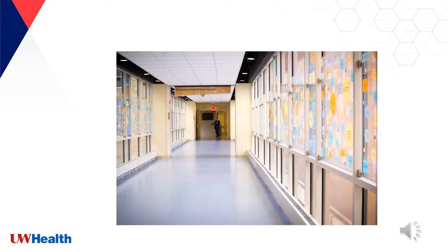A unique feature about the University Hospital is the sky bridge that connects the main hospital to the American Family Children's Hospital, also known as AFCH. The hallways are decorated with the names of various donors who have contributed to AFCH. Something to know when you are leaving University Hospital and going to AFCH is that the floors are numbered differently — when you leave the second floor of UH via the sky bridge, you'll arrive on the first floor of AFCH.